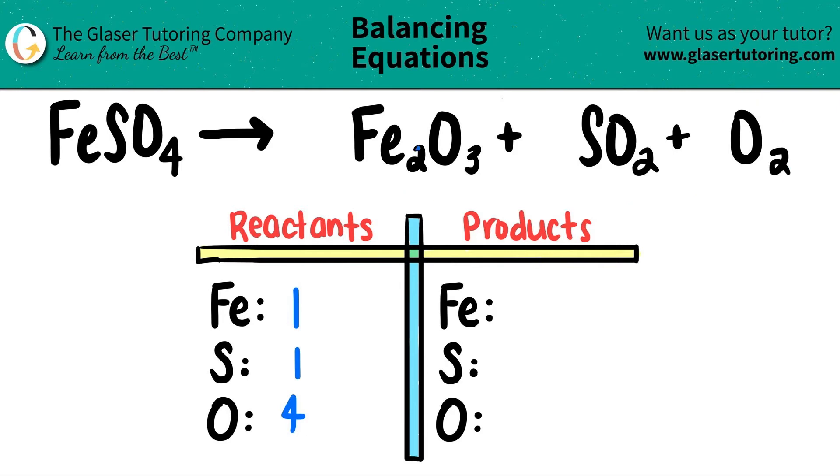Coming on over to the right-hand side, I see that I have two iron. So I'm going to put a two here. The sulfur is over here. I have one of them. And now for the oxygen, just be careful. I have oxygen in three different spots. So I have to add them together. Literally, there's a plus sign here. So let's just add them together. I have three plus two plus two. Three plus two is five. Five plus two is seven. So I have seven total oxygens on the right side.